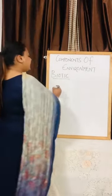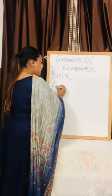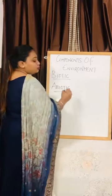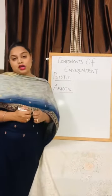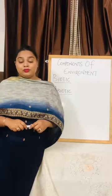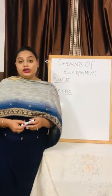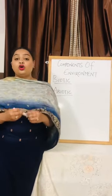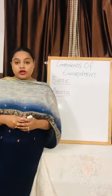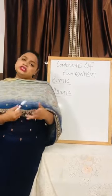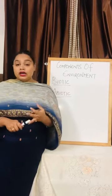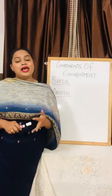What are abiotic components? Abiotic components are those components which are non-living components of environment. But all the living components, or we can say the biotic components, depend on these components. Abiotic components are air, water, soil and sunlight.